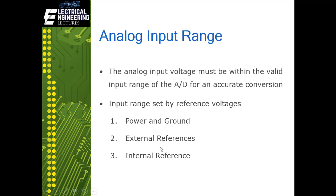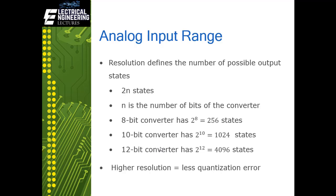In the upcoming video I will show you how to use an external reference to read analog signals. Resolution defines the number of possible ADC output states. For an 8-bit converter the possible states are 0 to 255, which is 2 raised to the power of 8. For a 10-bit ADC the possible outputs are 1024, and for a 12-bit converter the output states are 4096. More bits means higher resolution.